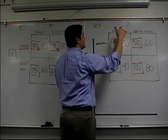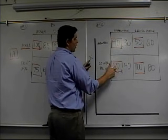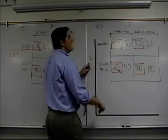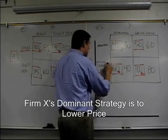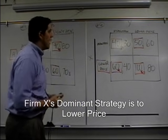If firm Y decides to maintain, which one's better? 40 or 60? 60. Okay. And if they decide to go lower, which one's better? 50 or 100? 100. That's it. Lower their prices, their dominant strategy.